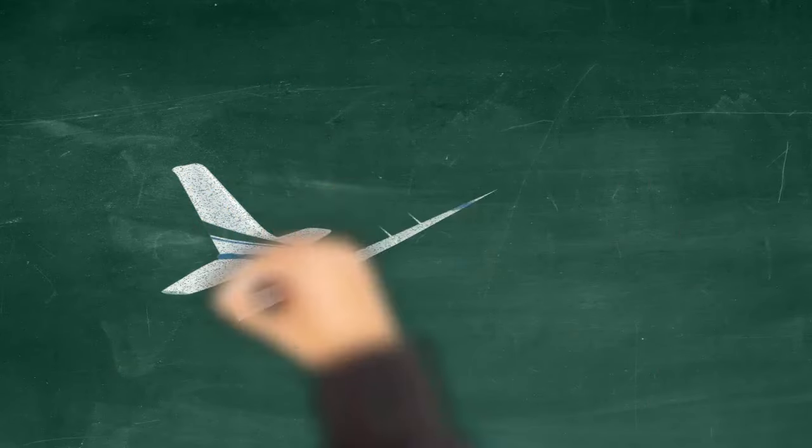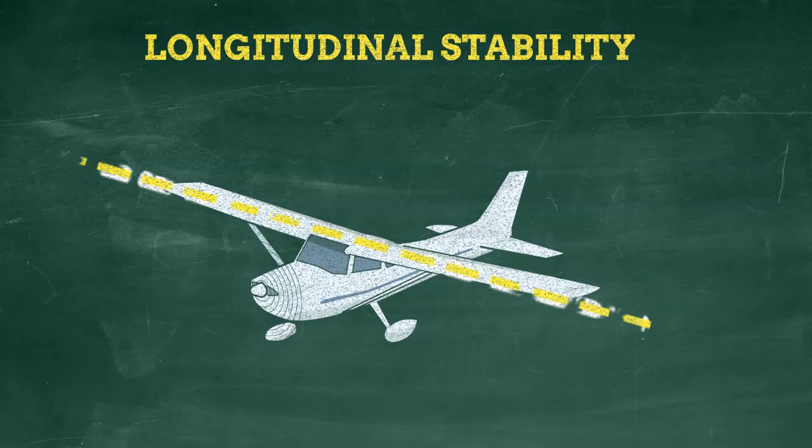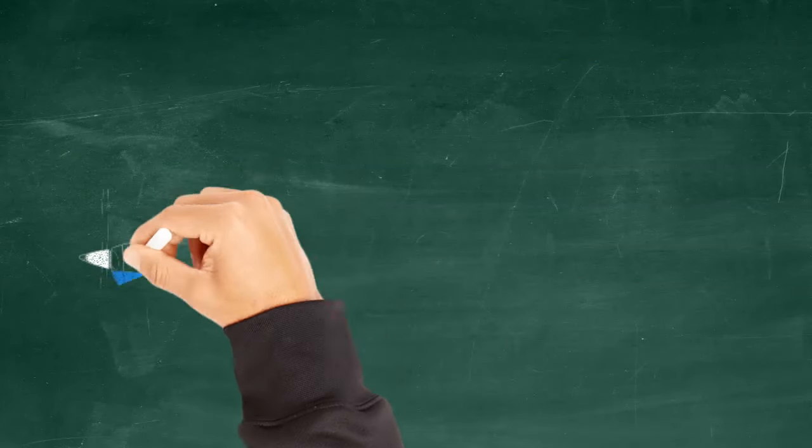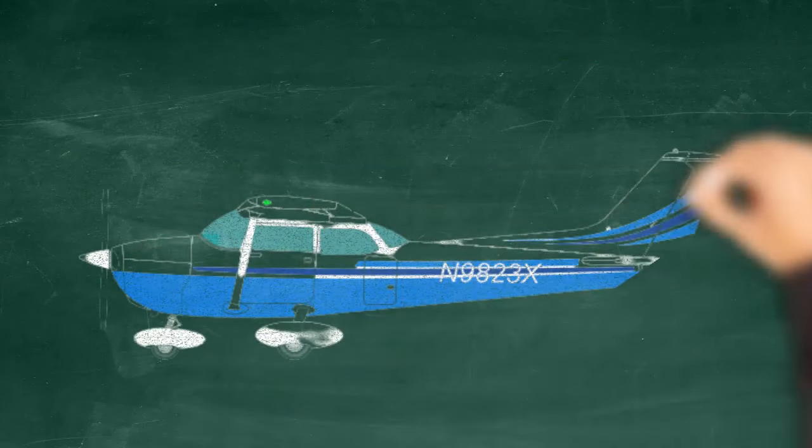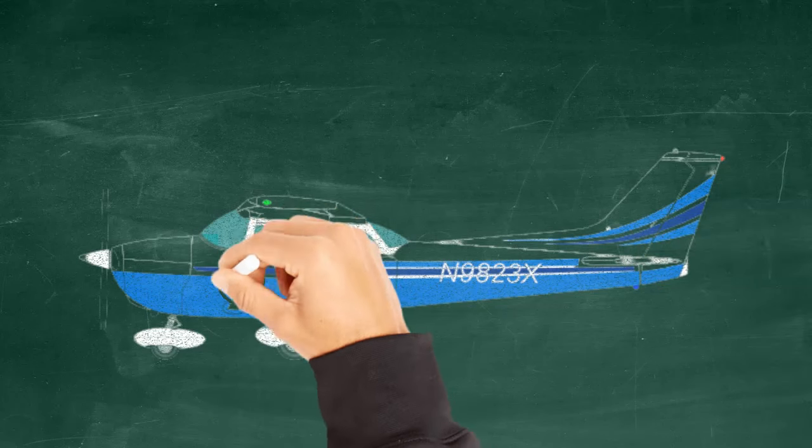Now that you understand the different types of stability, let's talk about some of the design features that make an aircraft more stable. First, let's talk about how we get longitudinal stability on the lateral axis of our airplane.